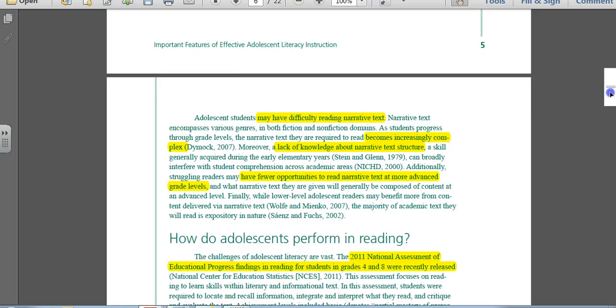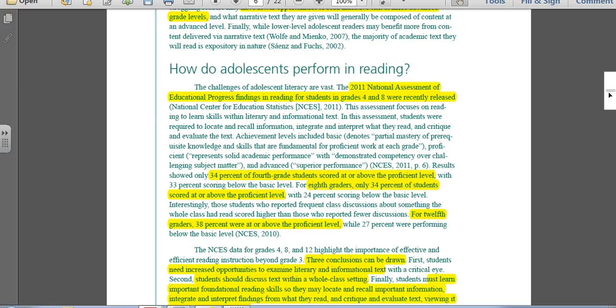So let's talk about how adolescents overall have performed in reading. In 2011, the National Assessment of Education Progress findings found in students 8th, 4th, and also in 12th were released. 34% of 4th grade students scored at or above proficient levels. 8th grade, 34% scored at or above, and for 12th grade, 38%. Notice that we're not even hitting the 50% mark yet on students that are at or above proficient level. So we've got work to do.